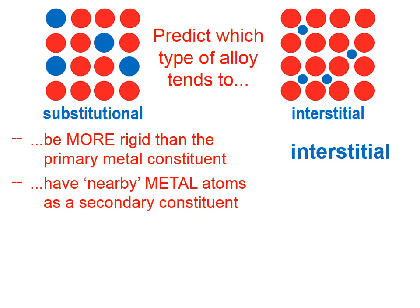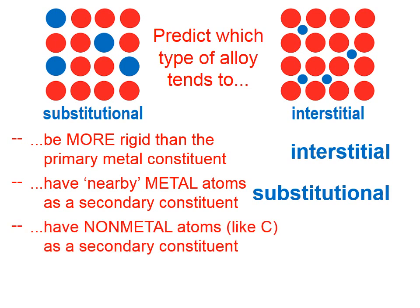Which type of alloy would probably have nearby metal atoms as a secondary constituent? And when I say nearby, I'm talking about on the periodic table. Metal atoms that are nearby the primary constituent atoms are going to be about the same size, so we would predict a substitutional alloy. How about the type of alloy that tends to have non-metal atoms like carbon as a secondary constituent? Carbon is very much smaller than a typical metal atom, so we would predict that this would be an interstitial alloy.